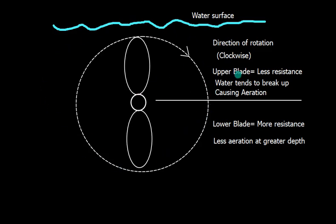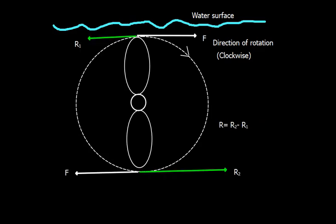The upper blade will experience less resistance. Why? Because the water tends to break up on the upper side and it causes some aeration. The lower blade will experience more resistance because the aeration will be less at greater depth.